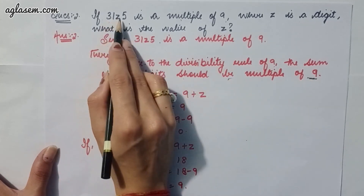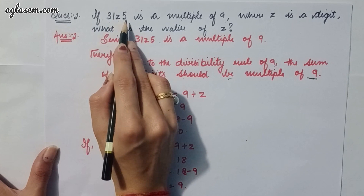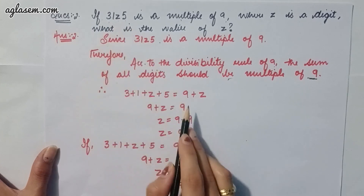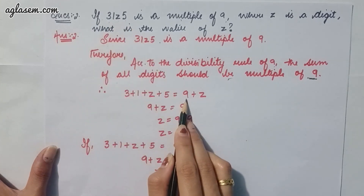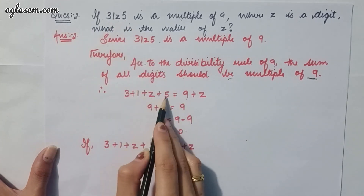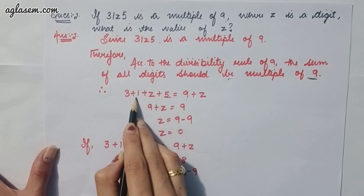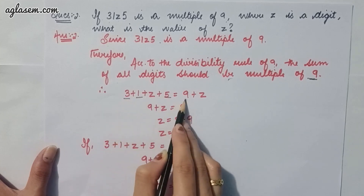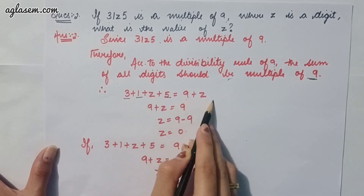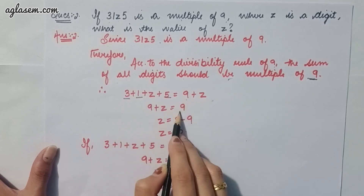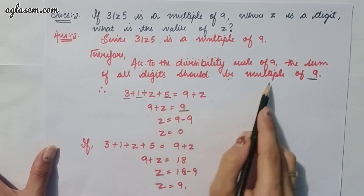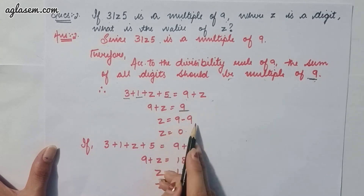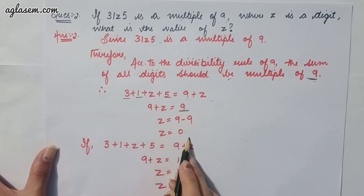So 3 + 1 + z + 5 = 9 + z. We get 9 + z equals 9, which gives z = 9 − 9 = 0.